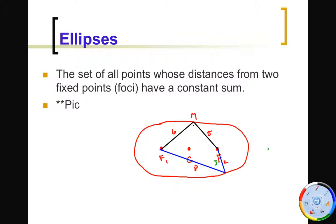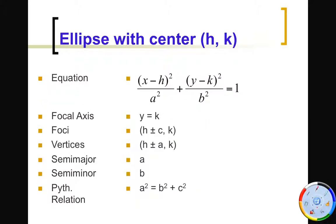Now we want to look at the equation and how things interact on the ellipse. The equation kind of looks like a circle: we've got (x − h)² over a² plus (y − k)² over b² equals 1. The values a and b come from the ellipse itself. Notice that h, k is your center. Using the Pythagorean relation, whatever we say is equal to the sum of two squares is the longest side — we call this the hypotenuse, essentially.